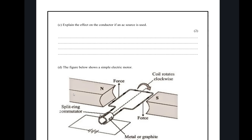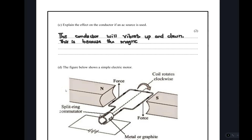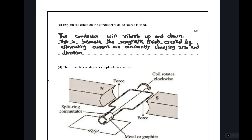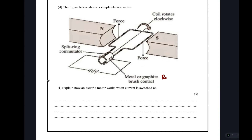Explain the effect on the conductor if an alternating source is used. Alternating current keeps changing in size and direction, so the magnetic fields created are constantly changing in magnitude and direction. As a result, the conductor will vibrate up and down.